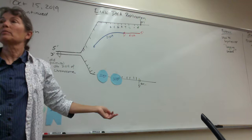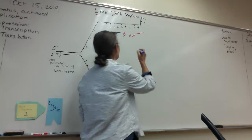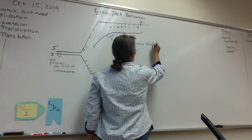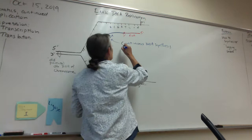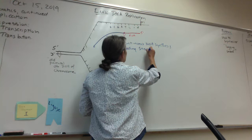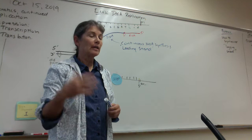What kind of DNA synthesis is this? Once DNA polymerase starts, it continues — it doesn't stop. This is continuous DNA synthesis. The strand made this way is called the leading strand. So the leading strand is made using continuous DNA synthesis. I think that's where we left off last time.